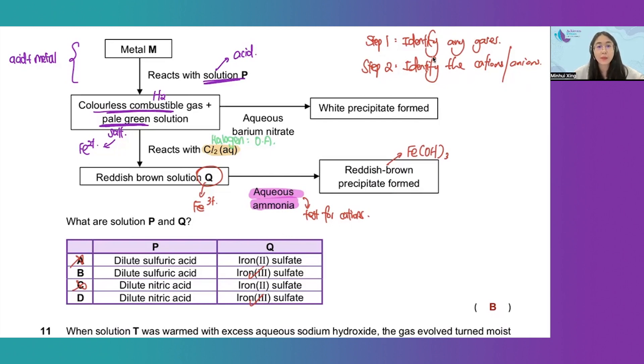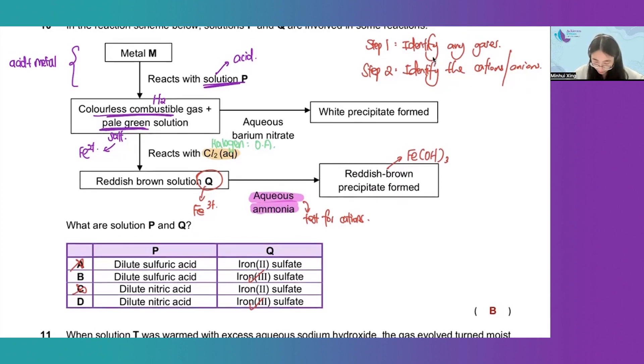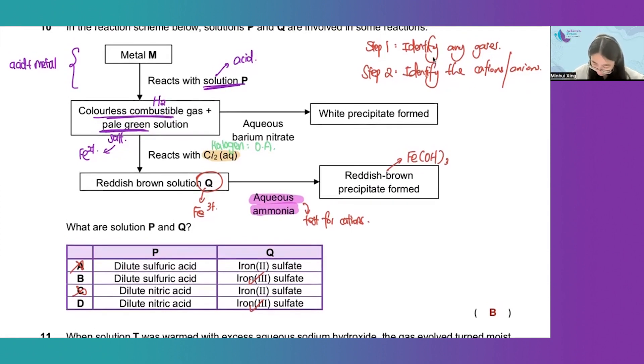Now, how do we know the identity of solution P? Since all acids will contain—the definition of acid is that it dissolves in water to produce H+ ion.